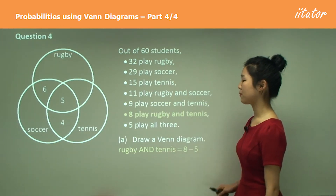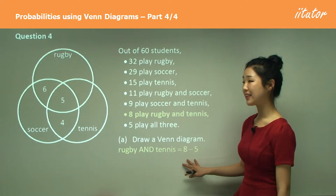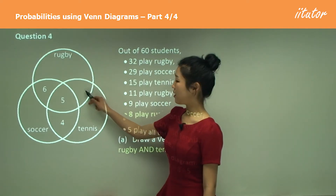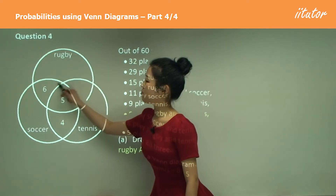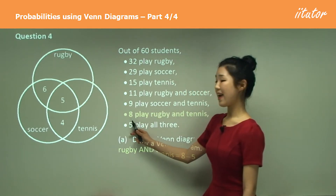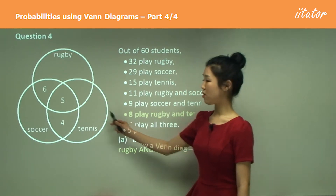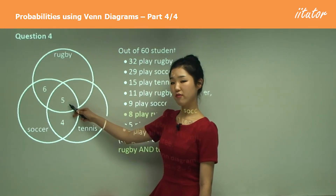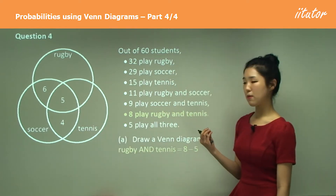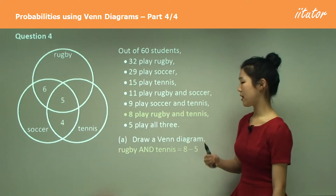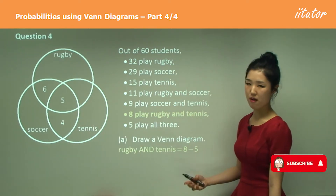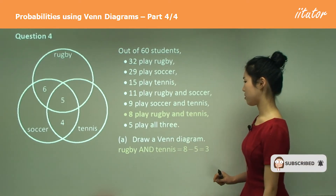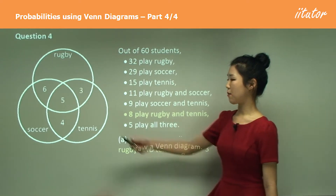I'm going to find the number of people who play rugby and tennis only. We know that this big football-looking shape is eight and we know five play all three sports — five is the overlapping part. So to find just the people who play rugby and tennis, we simply subtract five from eight, which gives us three.